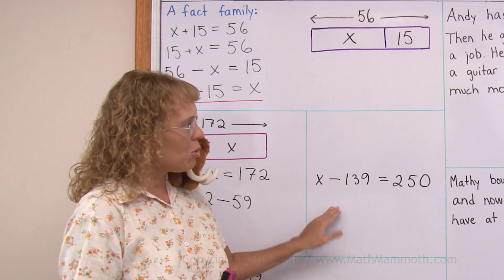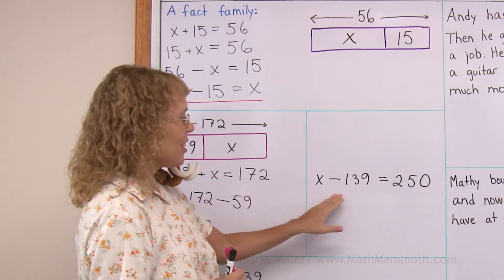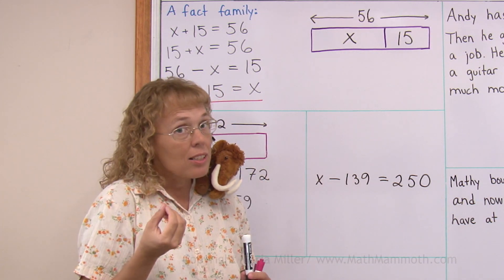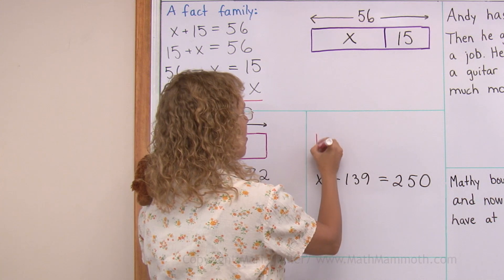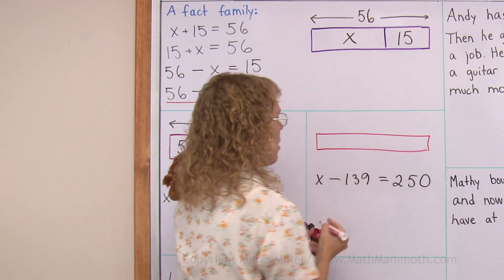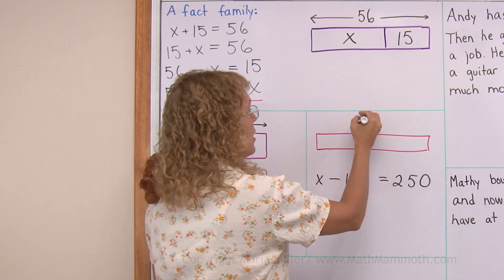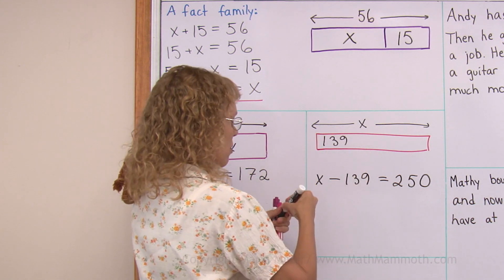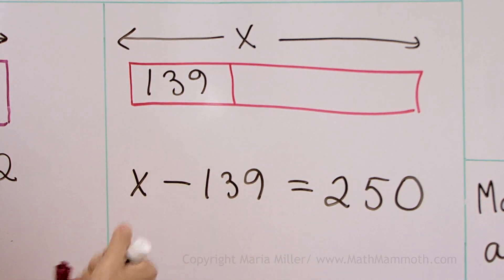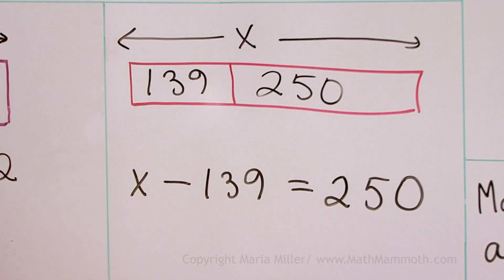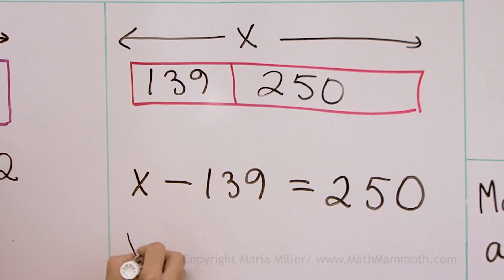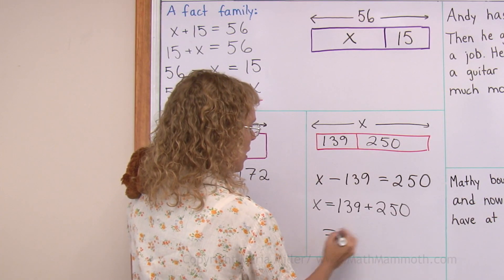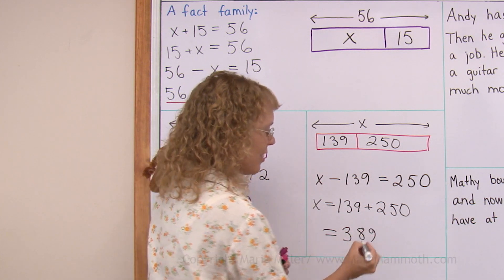Over here, our task is to draw a bar model to match this subtraction equation with an unknown. Remember, subtraction starts with the total. So if I draw this bar model, the total is x. Then this would be one part, and if this is taken away, 250 is left. So to solve for x, you add those two together, and that is 389.